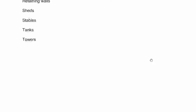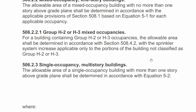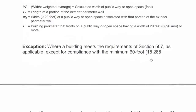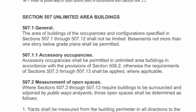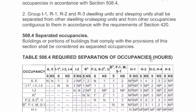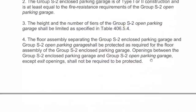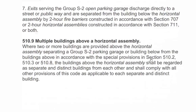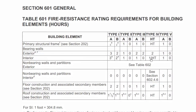This is page 66. So here we are — type of construction. And sure enough, right there, first thing we find: fire resistance rating requirements for building elements in hours.